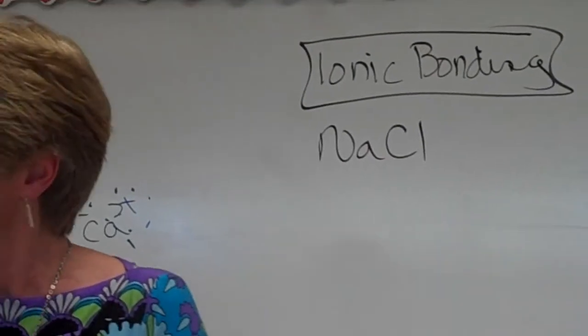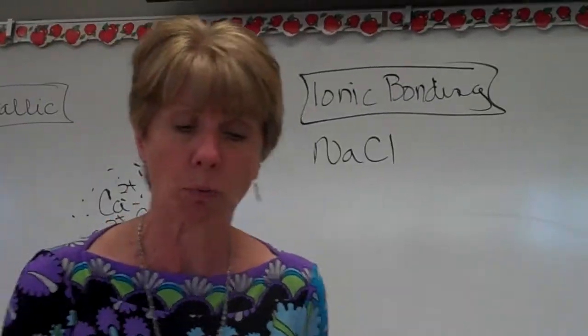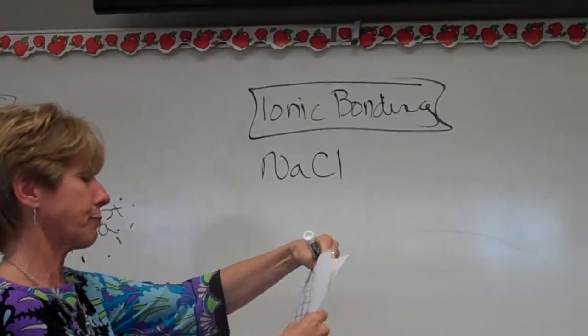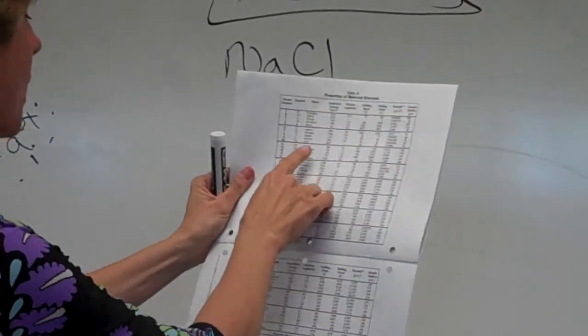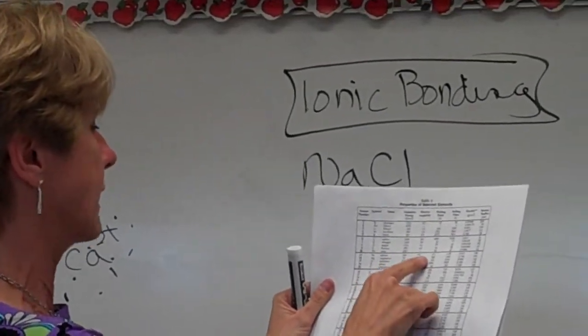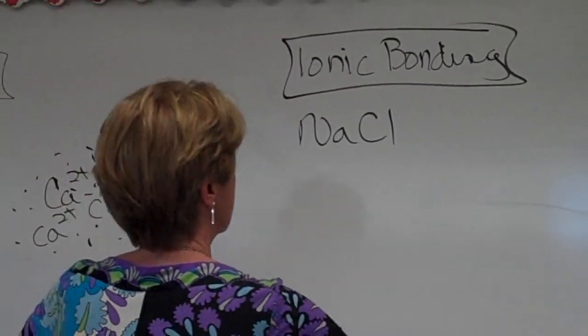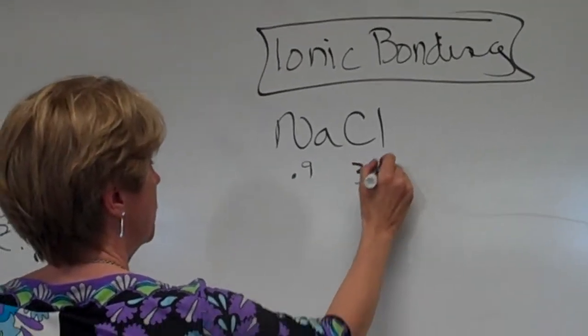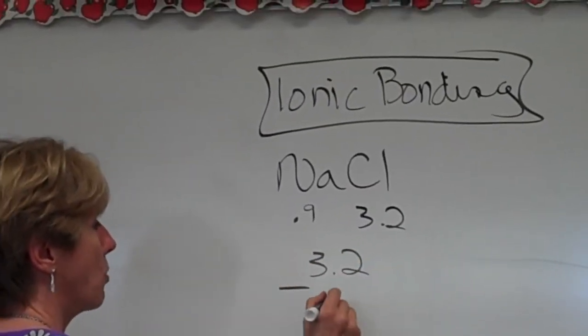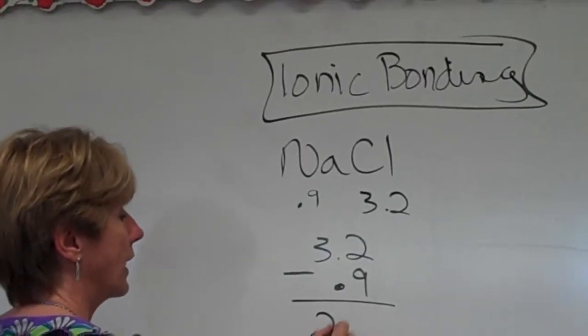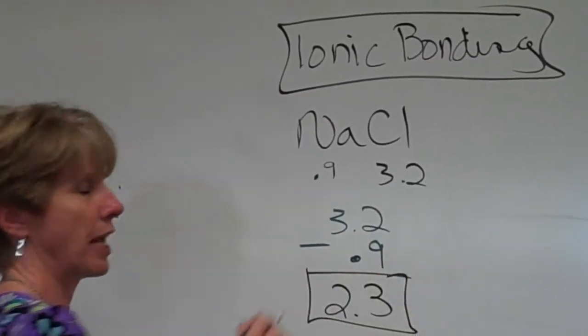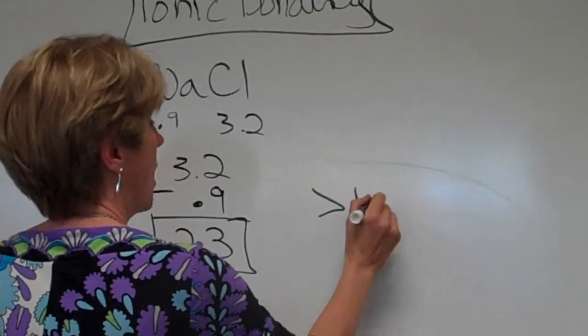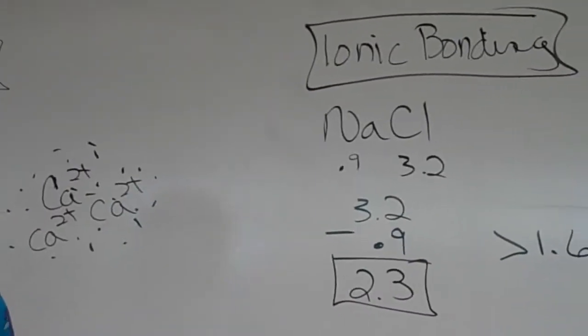So take out your reference tables and turn to the table in the back where we find the electronegativities. So we go to table S, and we look up sodium. Sodium has an electronegativity of 0.9. Chlorine is 3.2. When you subtract 0.9 from 3.2, you get a difference of 2.3. If the electronegativity difference is greater than 1.6, it is ionic bonding.